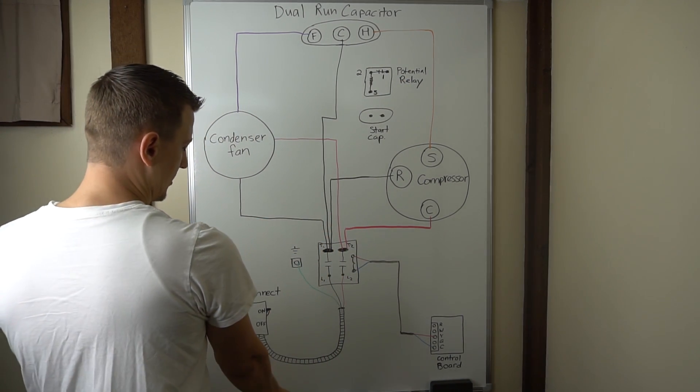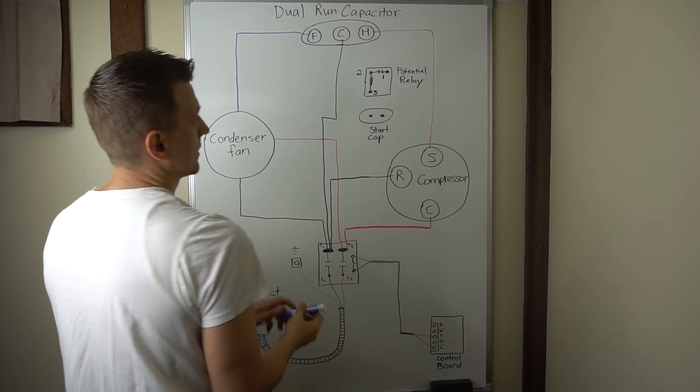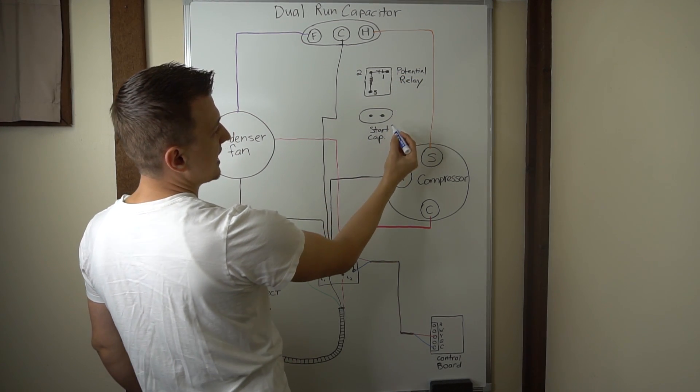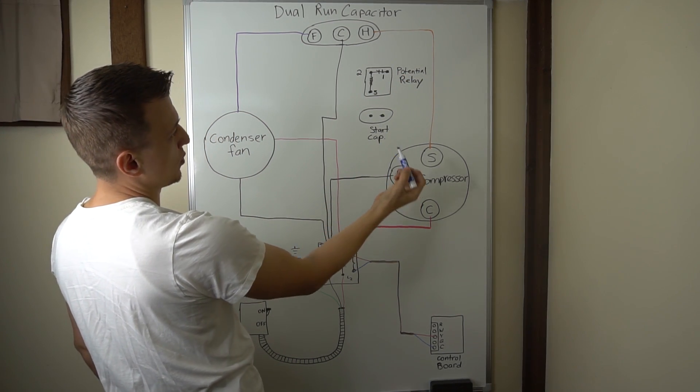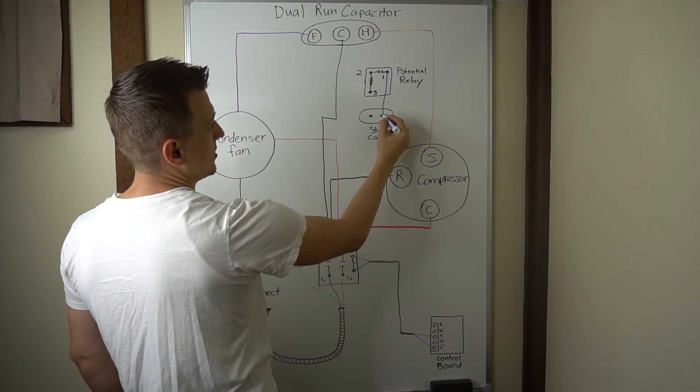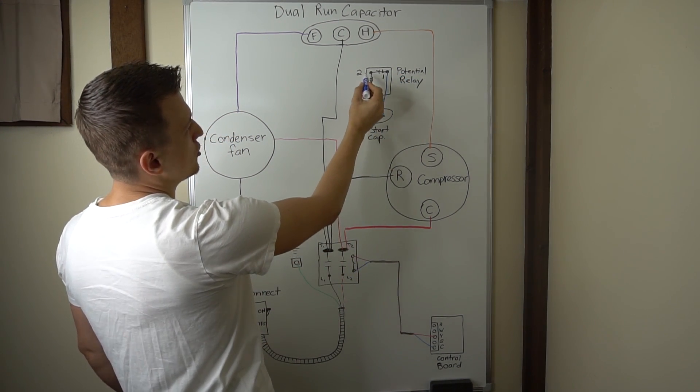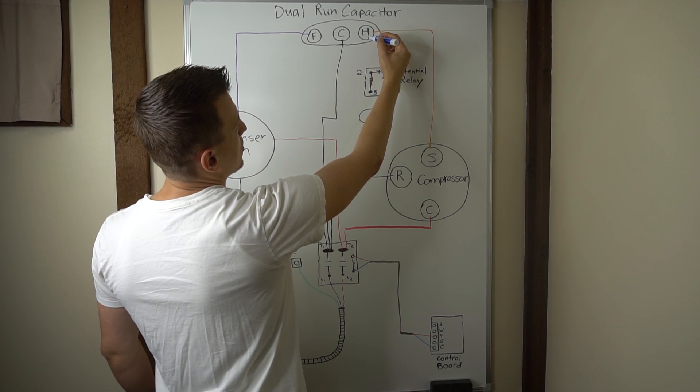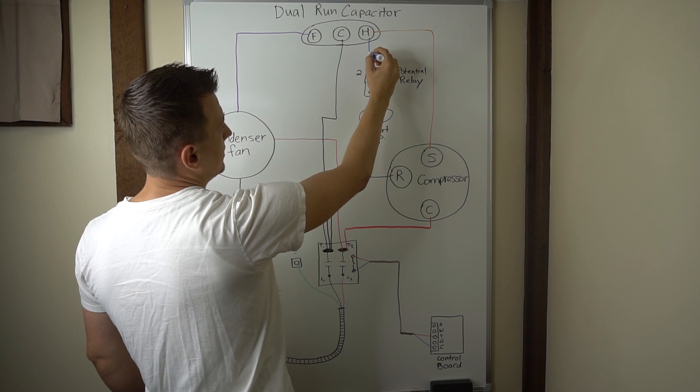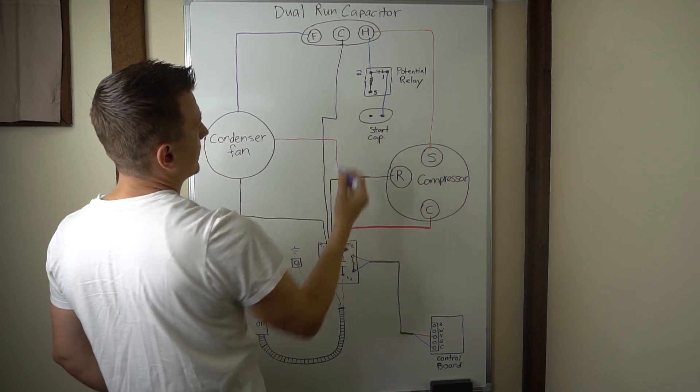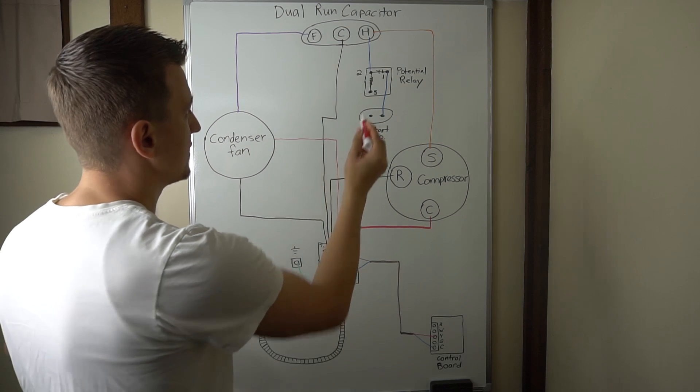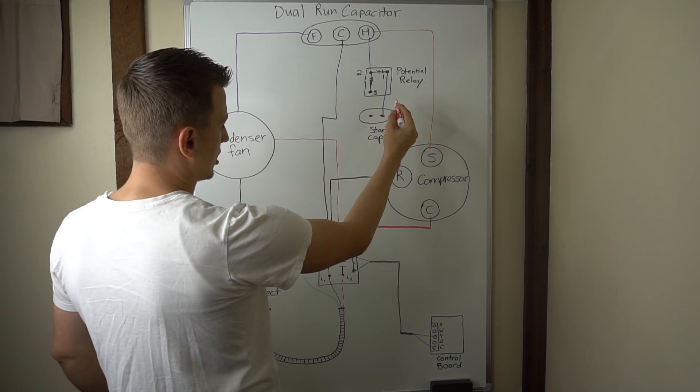So the way you'd wire this up is 1 on the potential relay will be hooked up to one side of the start capacitor with a jumper wire. So you got one piece of wire going from there to there. 2 will go from the potential relay to Herm on the run capacitor. Like that.